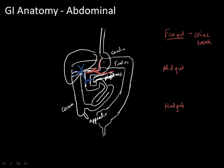The left gastric artery also branches off into the esophageal artery. The splenic artery goes to the spleen but also has a branch — the left gastroepiploic artery. The hepatic artery branches into the cystic artery, which goes to the gallbladder, as well as the gastroduodenal artery, which splits into the right gastroepiploic artery that anastomoses with the left. There's also the right gastric artery, which circles around to the inferior surface of the stomach and anastomoses with the left gastric artery.